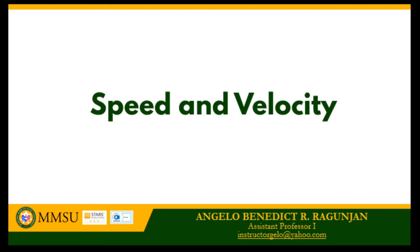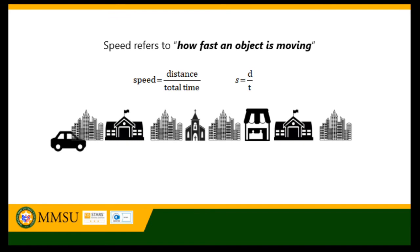The last video discussed ways of describing motion based on position, distance, and displacement. In this video, I am going to discuss other ways of describing motion based on speed and velocity. Speed refers to how fast an object is moving. It is defined as the distance moved per unit of time.